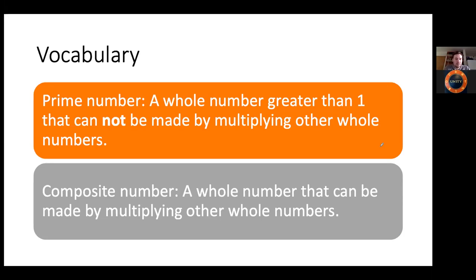A prime number is a whole number greater than one that cannot be made by multiplying other whole numbers. A quick example is seven — there's no number other than seven and one that you can multiply together to equal seven. You can't divide it by two, three, or four. Another example is eleven — you can't divide eleven by any number other than itself or one.